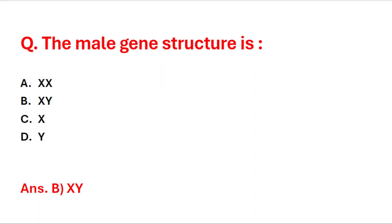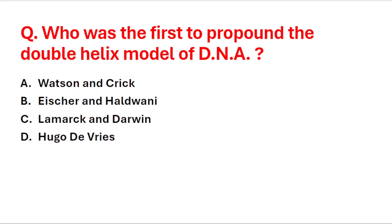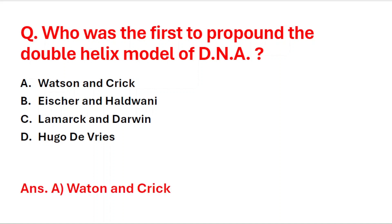Next question: who was the first to propound the double helix model of DNA? A: Watson and Crick, B: Esther and Haldwani, C: Lamarck and Darwin, D: Hugo Davis. The right answer is option A, that is Watson and Crick.